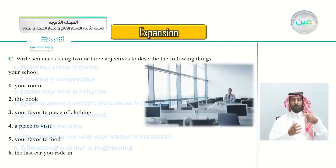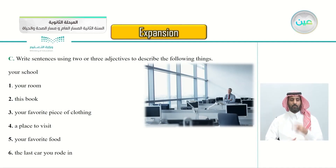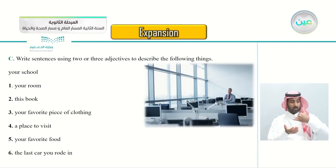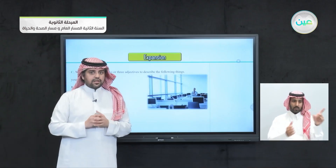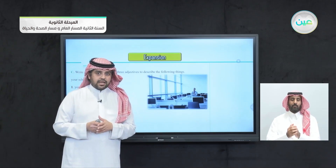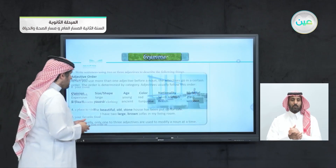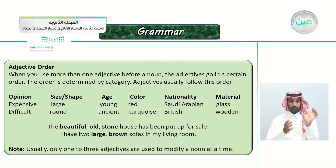Exercise C: write sentences using two or three adjectives to describe the following things — your school, your room, this book, your favorite piece of clothing, a place to visit, your favorite food, and the last car you rode in. Remember that when using more than one adjective, there is a specific order you must follow.